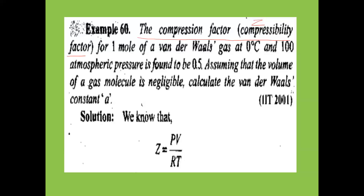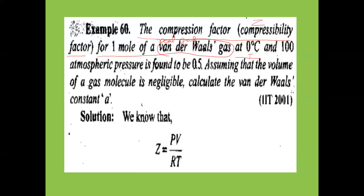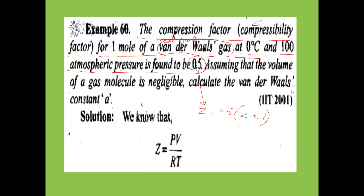Z is equal to PV/nRT. For one mole of a Van der Waals gas (real gas) at zero degrees Celsius (273 K) and 100 atmosphere pressure, the Z value is found to be 0.5. Z value less than 1 indicates negative deviation.